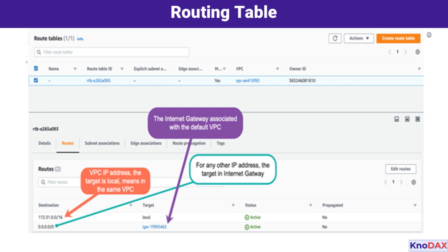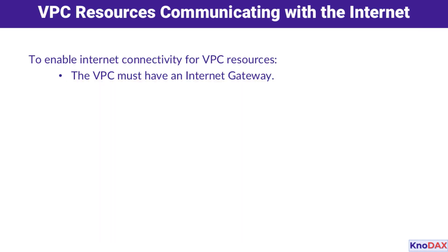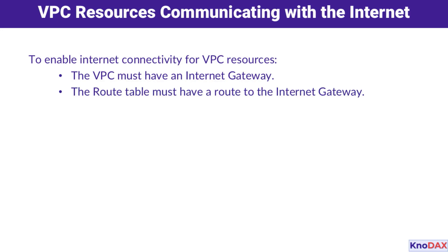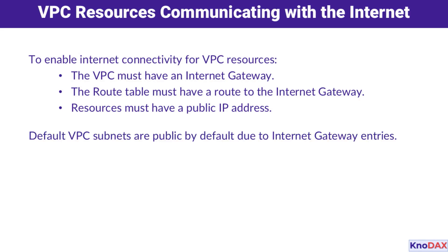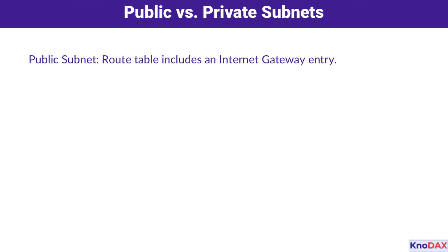To connect your VPC resources to the Internet, there are a few key requirements. First, the VPC must have an Internet Gateway. Next, the route table must include a route to that Internet Gateway. Lastly, the resource itself, like an EC2 instance, must have a public IP address. By default, subnets in a default VPC are public, thanks to the Internet Gateway entries already configured.